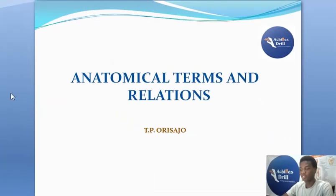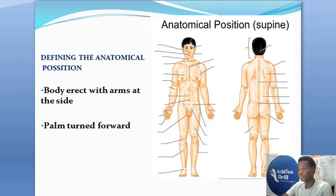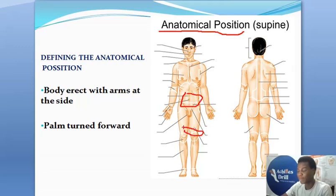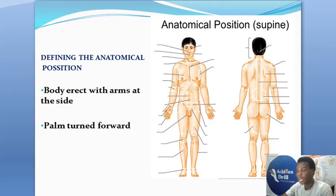When you talk about the anatomical terms and relation, the very first thing I would like to draw your attention to is the anatomical position. Whatever structure you're studying in anatomy — be it the abdomen, the lower limb or the upper limb — the subject has to adopt this very important position. Anatomical position is defined as the body being erect.